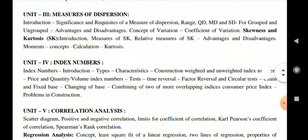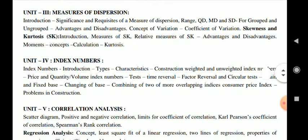Unit Three covers measures of dispersion. We start with basic definitions, significance and requisites of a measure of dispersion. We will study four different types of dispersion: range, quartile deviation, mean deviation, and standard deviation. These will be studied for both grouped and ungrouped data, along with advantages and disadvantages of each measure of dispersion.